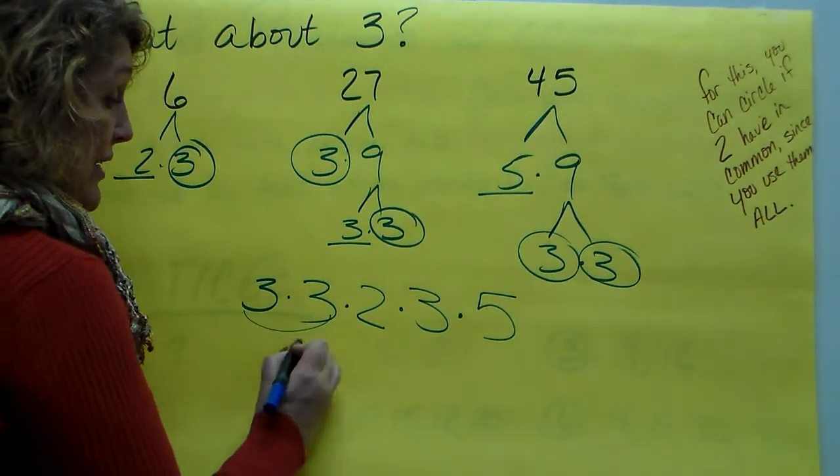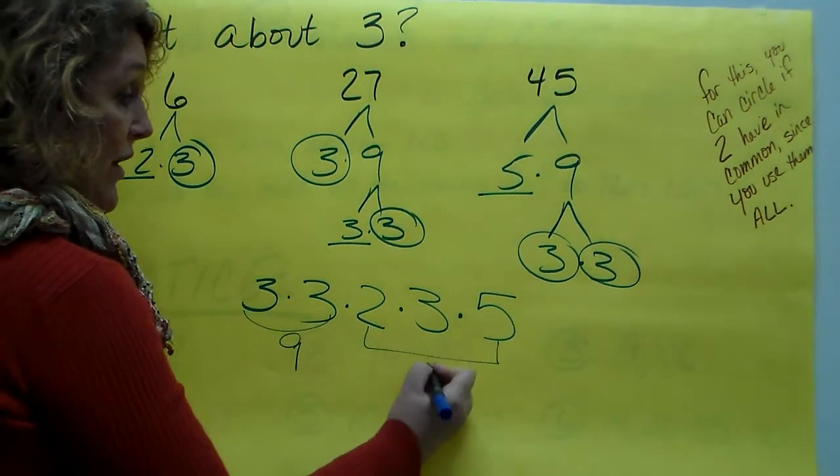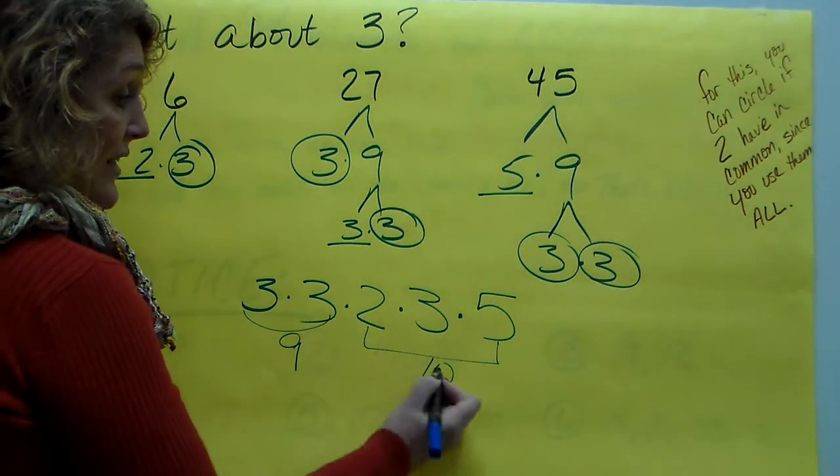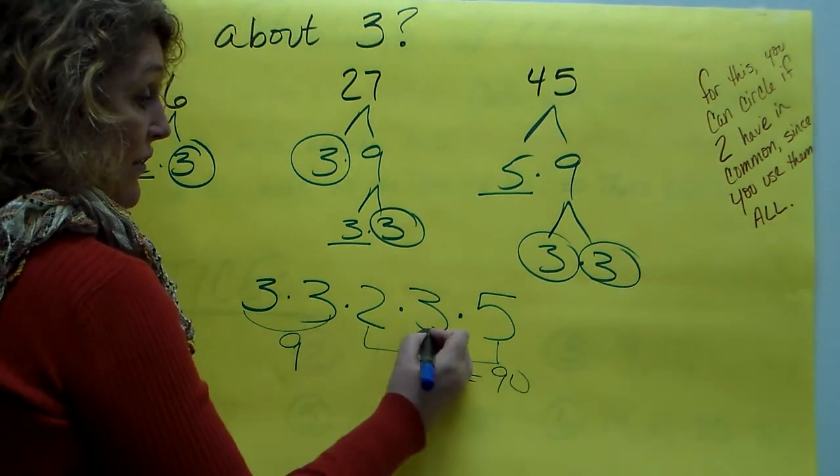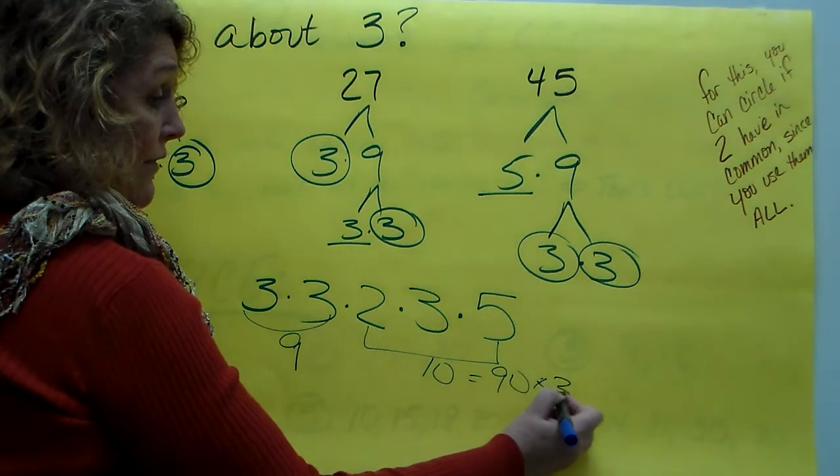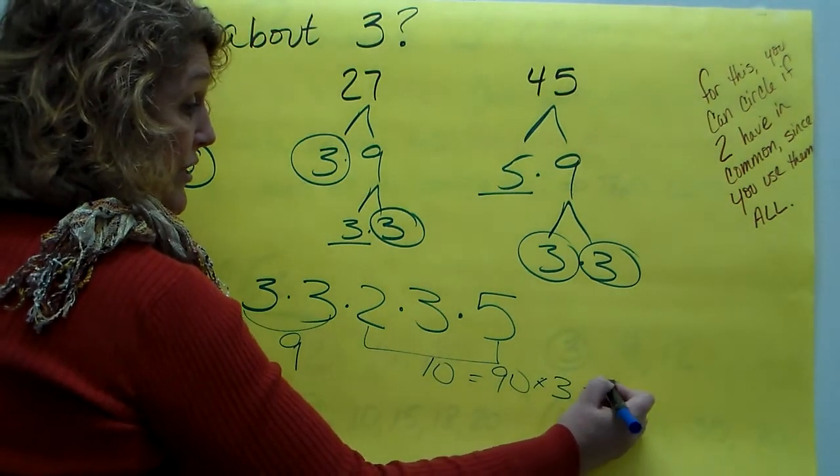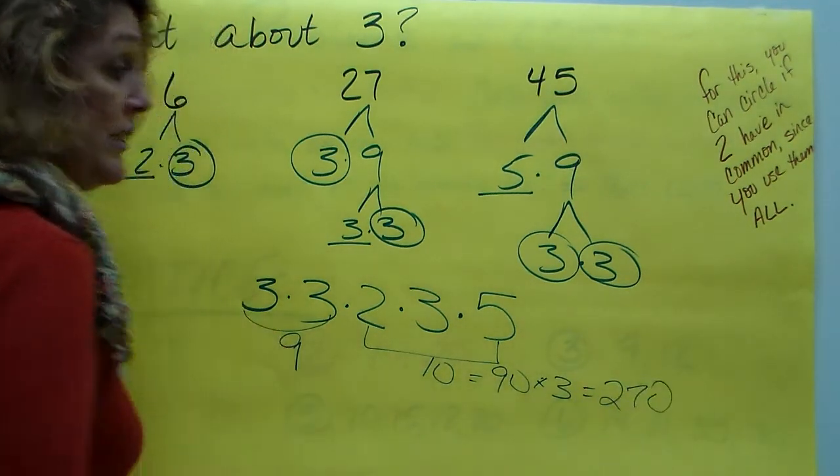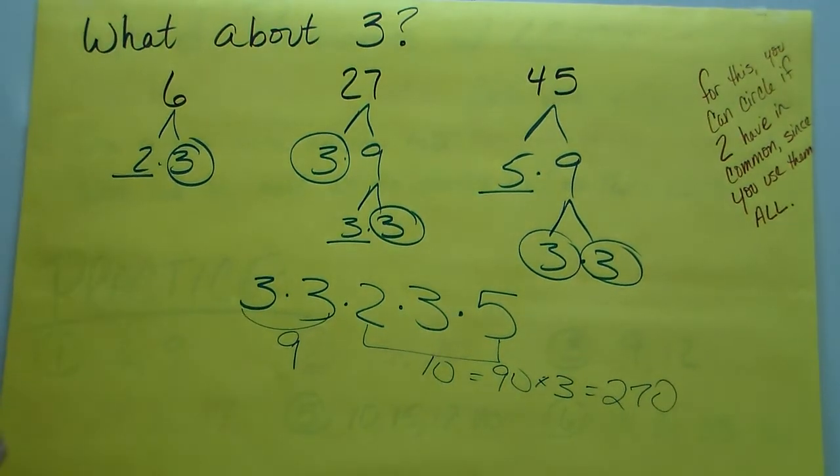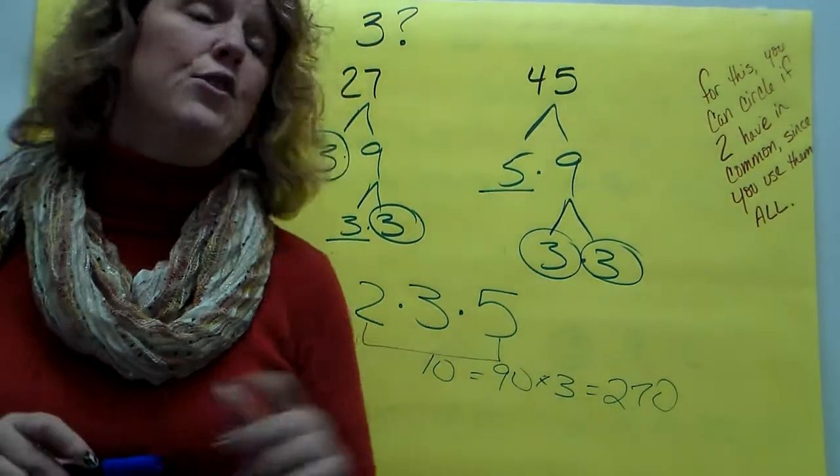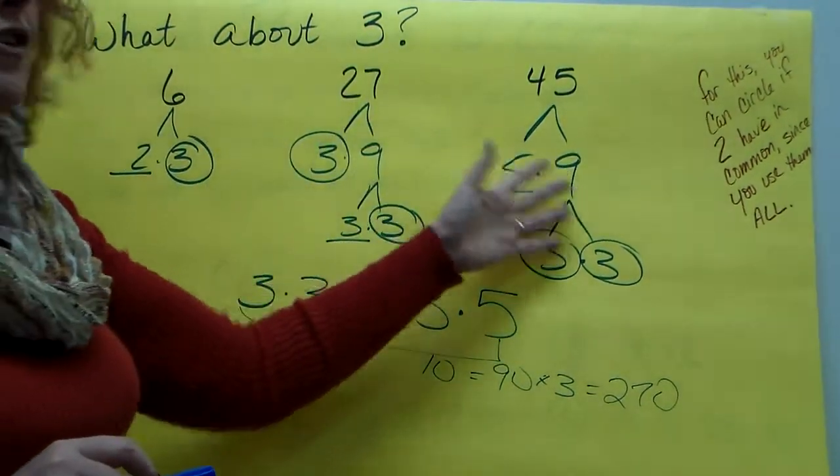And you've got your answer. So I know that 3 times 3 is 9. I know that 2 times 5 is 10. And 9 times 10 is 90. And now, I've got a 3 left over. That 9 times 3 is 27. So that's 270. It's really easy if you can keep track of what your numbers are doing.